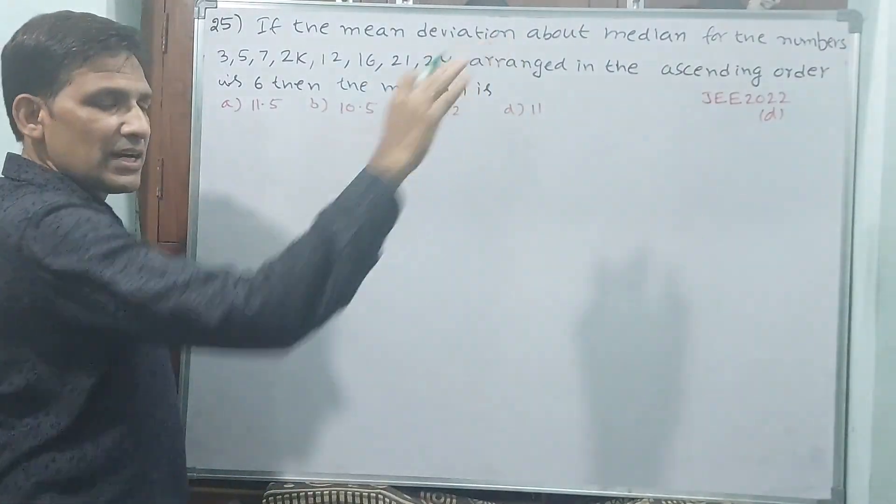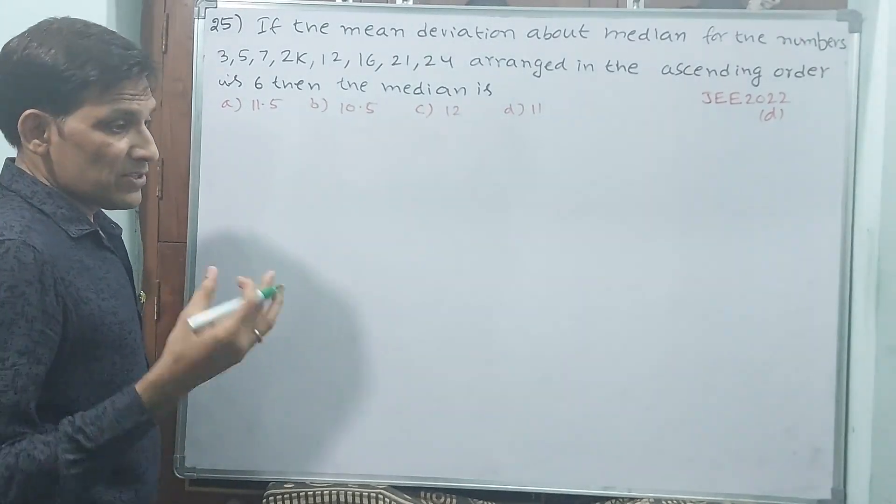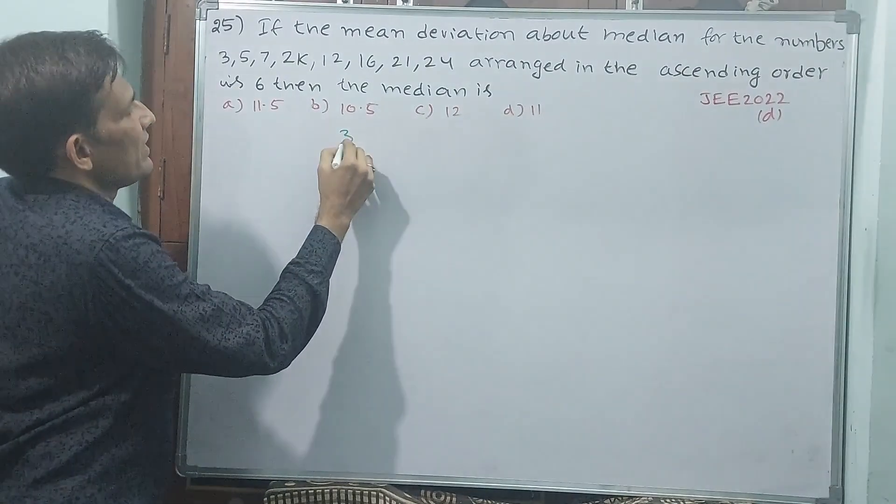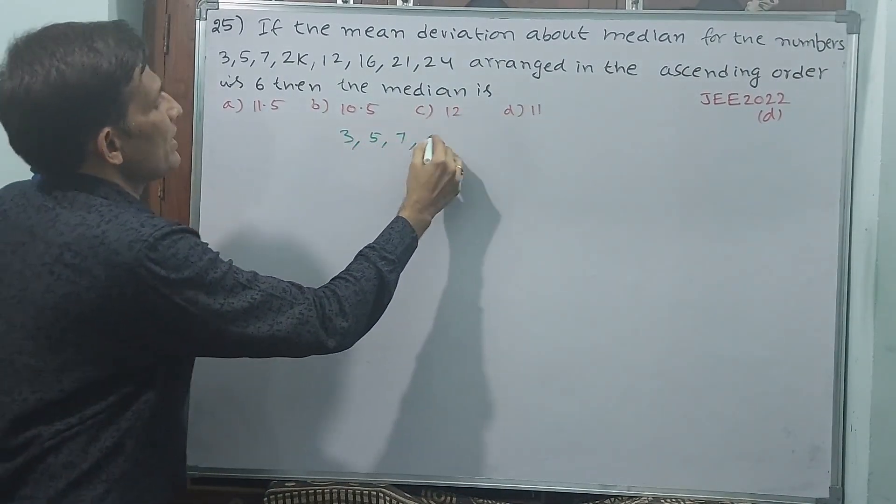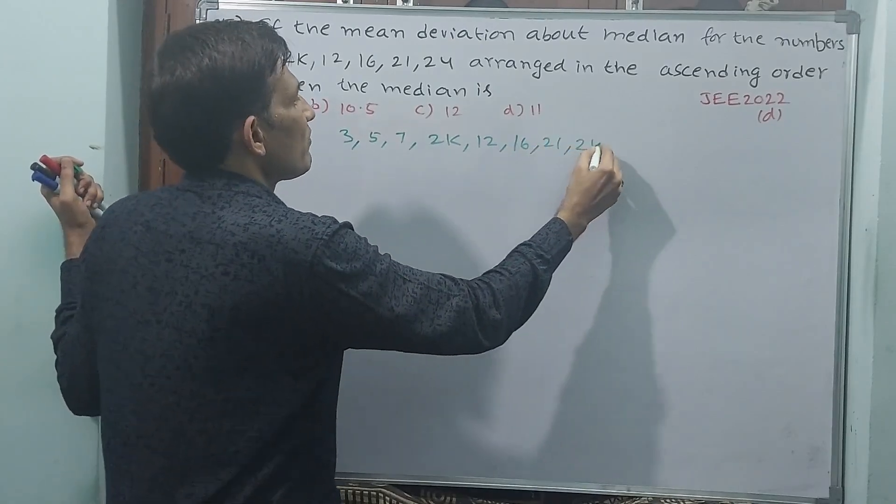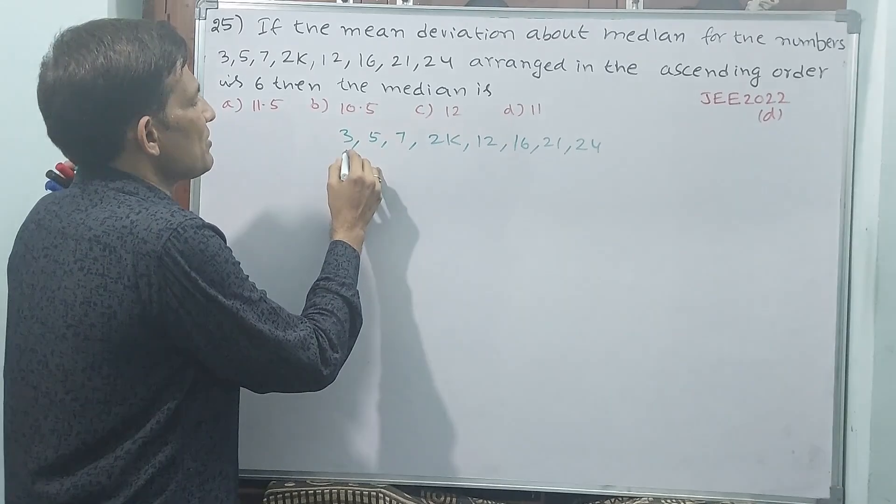Median means what? Ascending order we have to keep, we have to take the center if it is odd number. If it is even number, what am I going to do? 3, 5, 7, 2, K, 12, 16, 21, 24. See here, even number of observations are there.